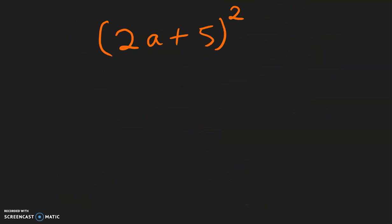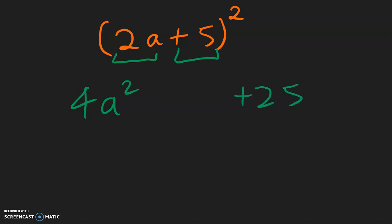For this example, multiply the front by itself: 2a times 2a will be 4a squared. Multiplying the back by itself: 5 times 5 is positive 25. Then multiply the front with the back: 2 times 5 is 10, so we have 10a. Multiply that by 2 and drop it into the middle, so that's 20a.